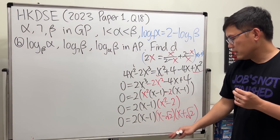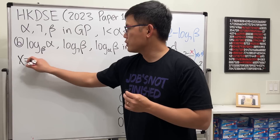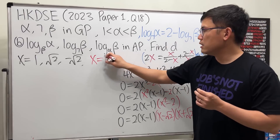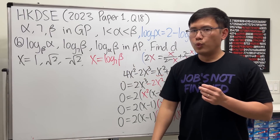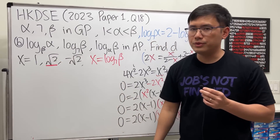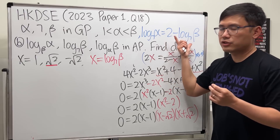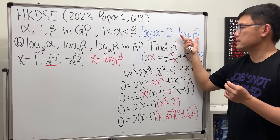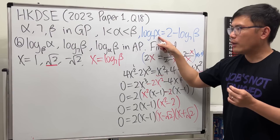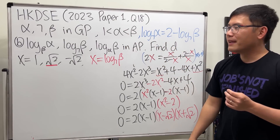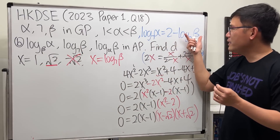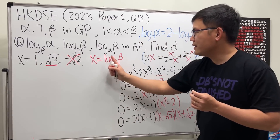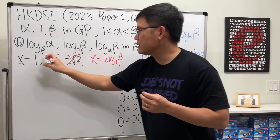Now we check which values are valid. Recall x = log₇β. If x = −√2, then log₇α = 2+√2, which would make α > β, contradicting 1 < α < β. If x = 1, then log₇β = 1 so β = 7, and log₇α = 2−1 = 1 so α = 7 as well, contradicting α < β. Therefore x must equal √2.